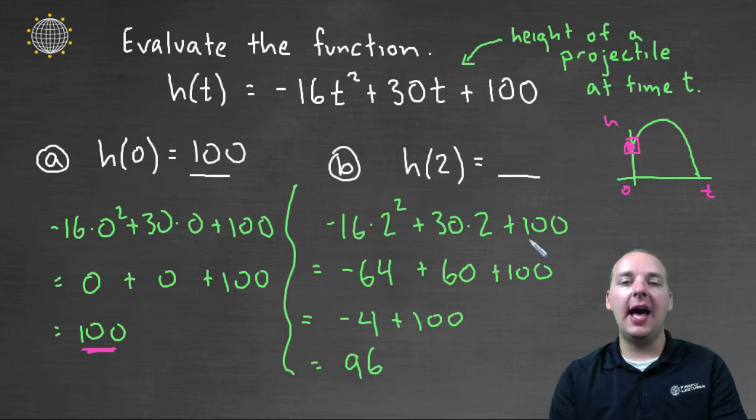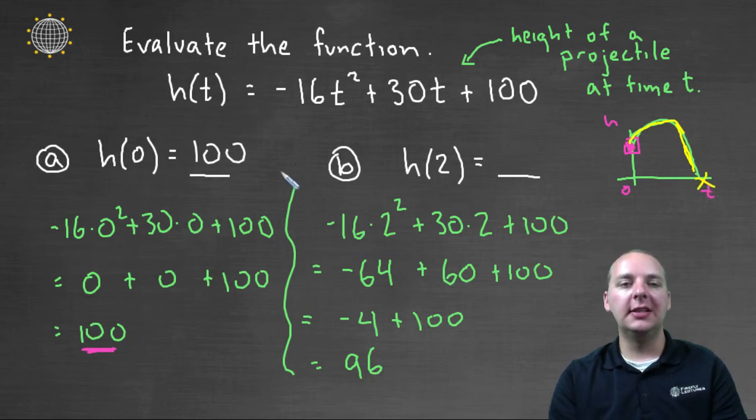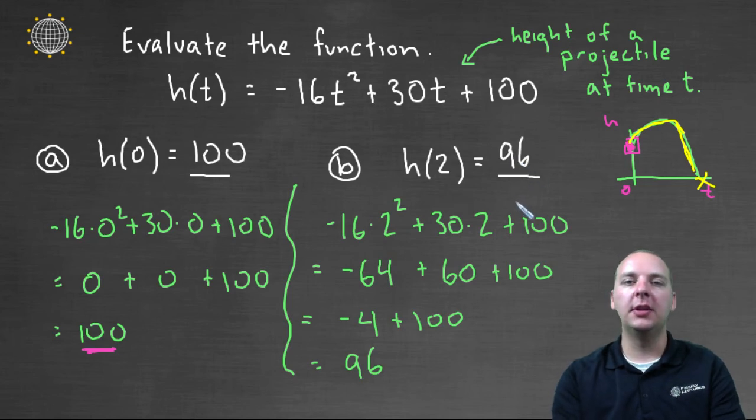So what that means is after two seconds, it's back down to ninety-six feet in the air. So this means it must have gone up in the air for a short period of time, and then it's coming back down, and eventually it will be less than a hundred feet, like ninety-six, and then eighty feet, and seventy feet, and twenty feet, and ten feet, and then bam, it's going to hit the ground. So we see this height is constantly changing depending on time, and so the height at two seconds was ninety-six feet, or meters, or something to that effect.